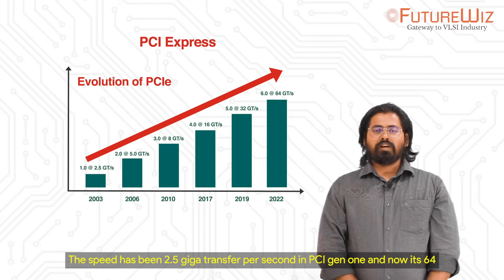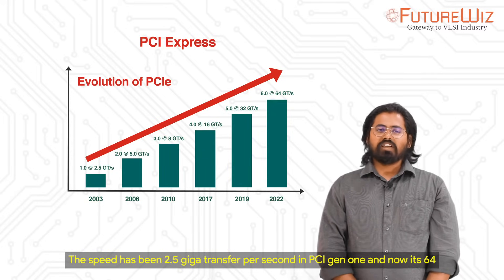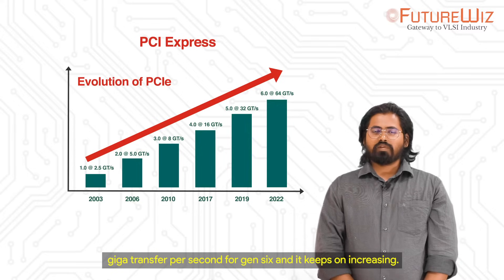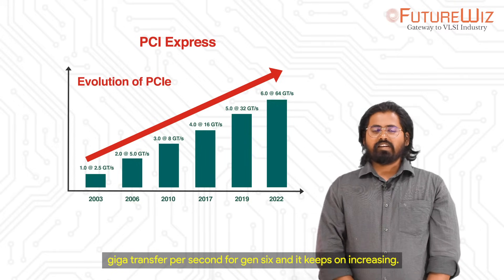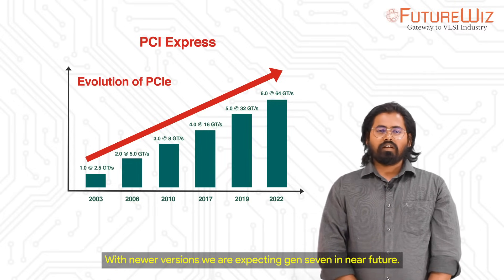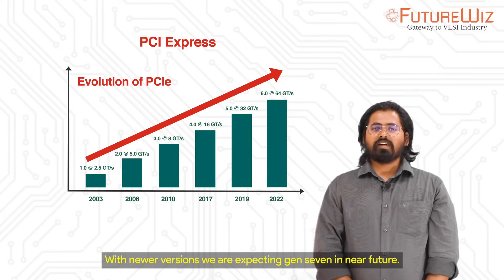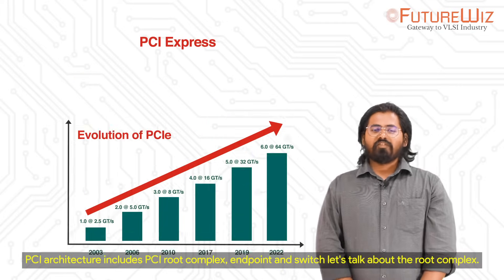The speed has been 2.5 gigatransfers per second in PCI Gen 1, and now it is 64 gigatransfers per second for Gen 6, and it keeps on increasing with newer versions. We are expecting Gen 7 in the near future.